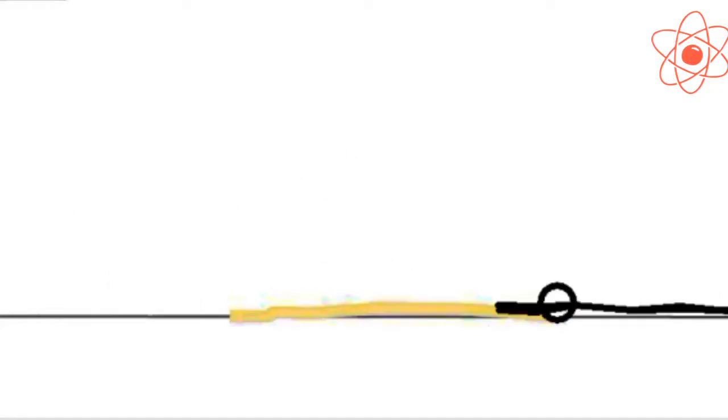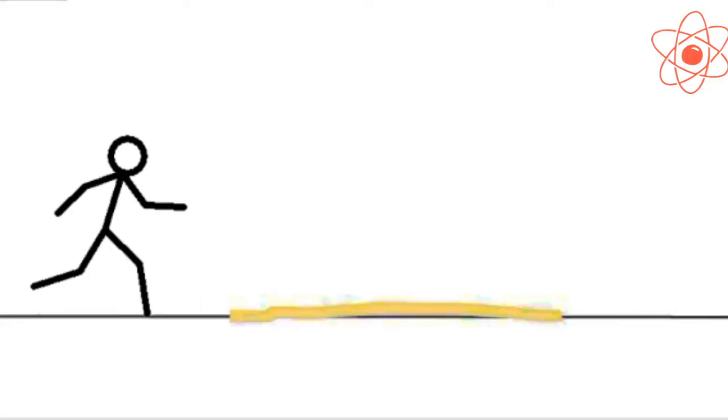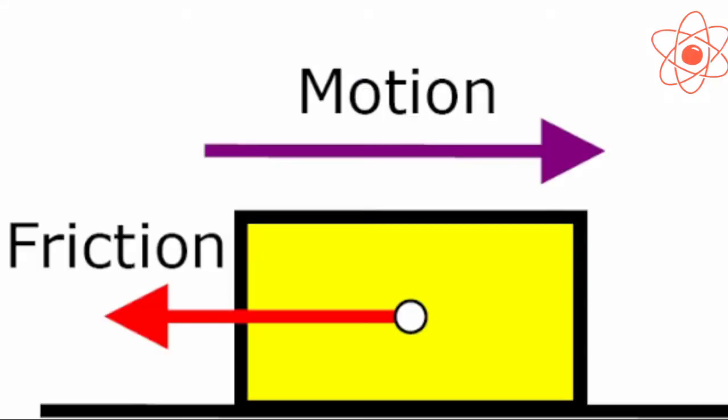Anything that rubs, slides, or slips has some kinetic friction. Any surface that moves against another surface has kinetic friction.